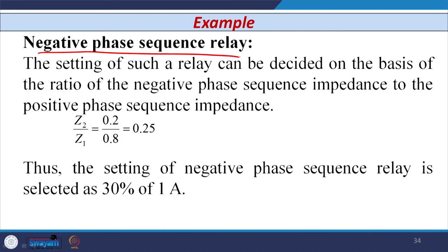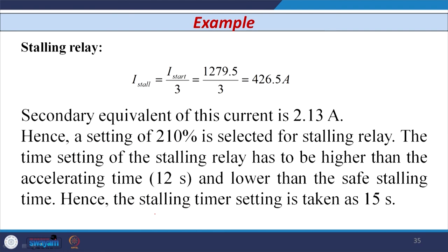For the negative phase sequence relay setting, the ratio of negative sequence impedance to positive sequence impedance is used: Z2/Z1 = 20%/80% = 0.25, or 25% in percentage. The setting range of the negative phase sequence relay should be greater than 25% of 1 A, so we can consider 30% of 1 A as the setting of the negative phase sequence relay.